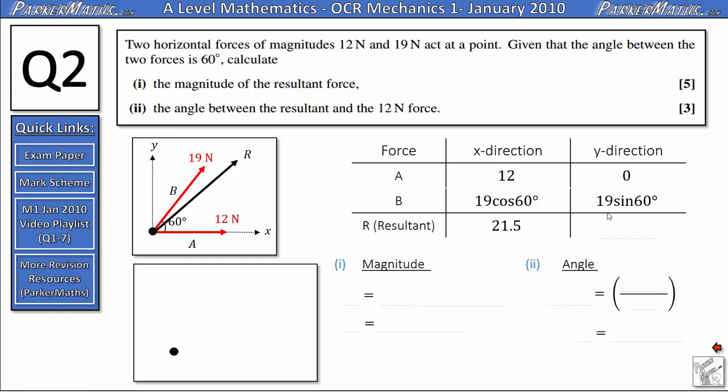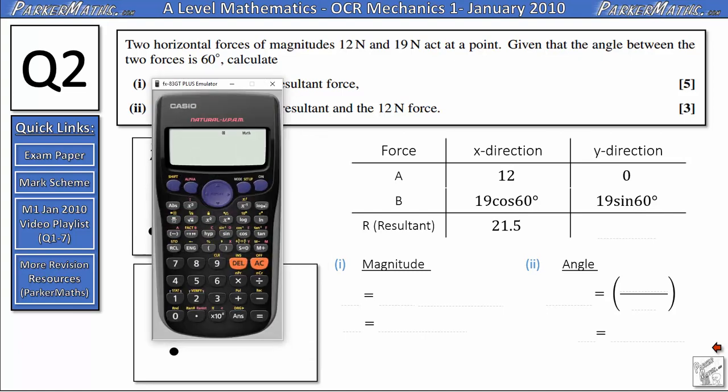In the y direction, we've got 19 sin 60. We could leave this as 19 sin 60, but just so I know the rough size of it, I'm going to work it out. That's going to be 16.45 and so on.